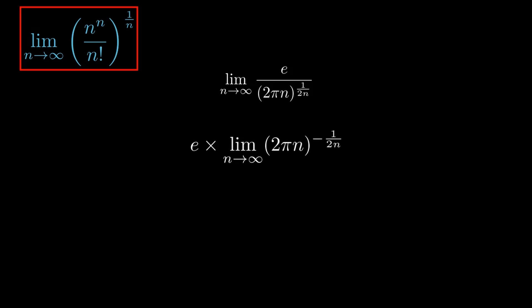We can rewrite this limit as e multiplied by the limit as n goes to infinity of 2πn all raised to minus 1 over 2n. We can factor the e out because it doesn't depend on n, so the limit doesn't change it.